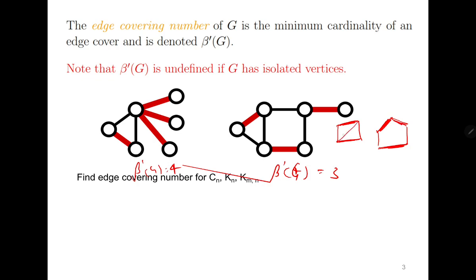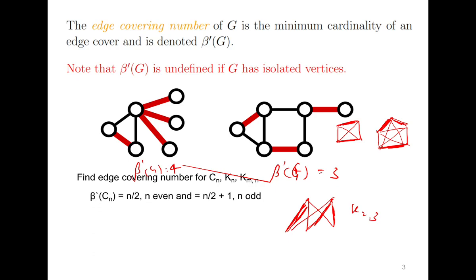The same logic works for the complete graph: if n is even, then β'(Kn) is n/2, but if n is odd, then it is n/2 plus 1, which is ⌈n/2⌉. In the case of the complete bipartite graph K(m,n), you need maximum of m and n edges, because taking only the minimum of m and n edges cannot cover all vertices on the larger side. So for Cn: ⌈n/2⌉, and for Kn: ⌈n/2⌉. For K(m,n): maximum of m and n.